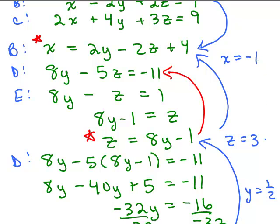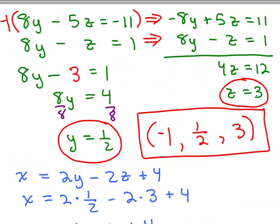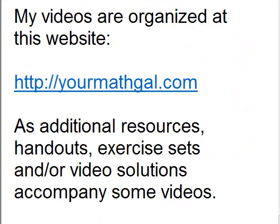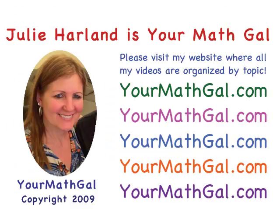So we get the same three answers: X equals negative 1, Y equals 1/2, Z equals 3. The ordered triple is still (negative 1, 1/2, 3) and the check is the same. Our final answer is the ordered triple: negative 1, 1/2, 3. Please visit my website at yourmathgal.com where you can view all of my videos organized by topic.